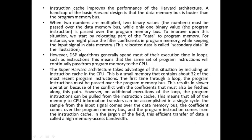The instruction cache improves the performance of the hardware architecture. When two numbers are multiplied, two binary values must be passed over the data memory bus while one binary value is passed over the program memory bus. To improve upon this, part of the data is relocated to program memory — for instance, a filter coefficient may be placed in program memory while keeping the input signal in data memory. This relocated data is called secondary data.